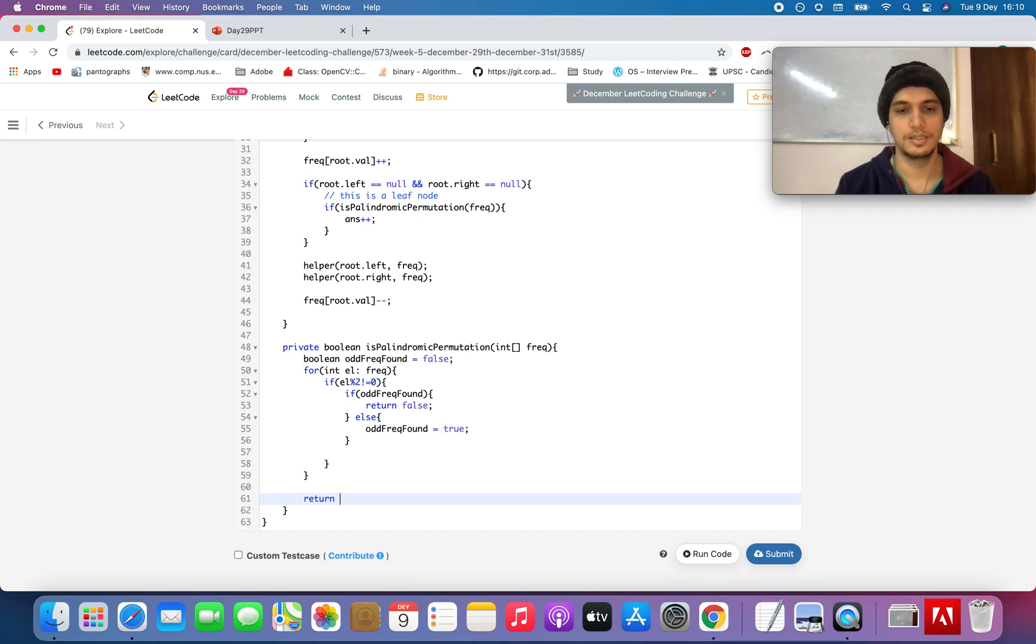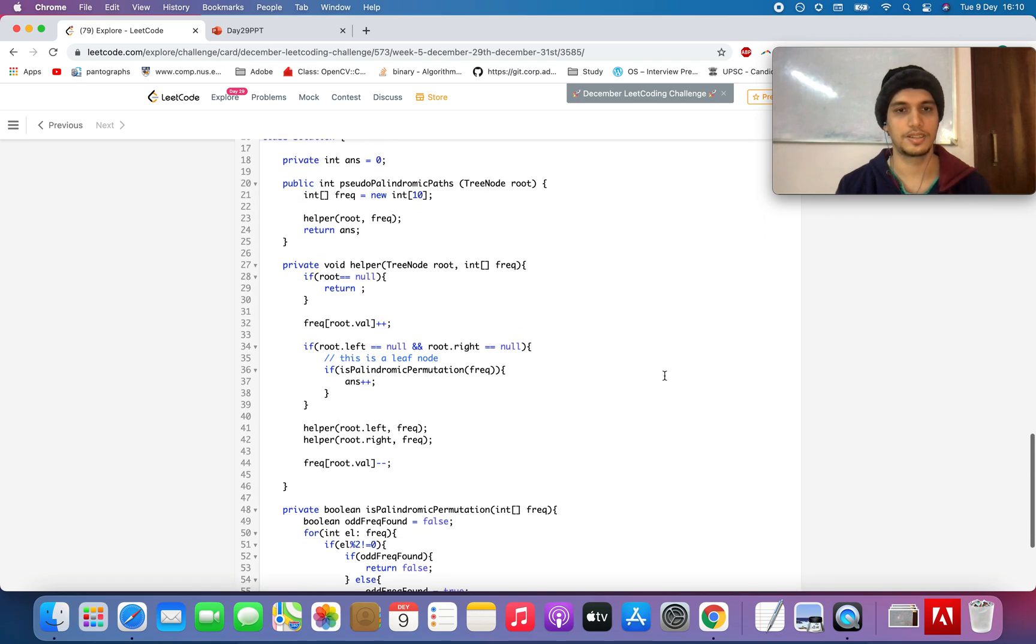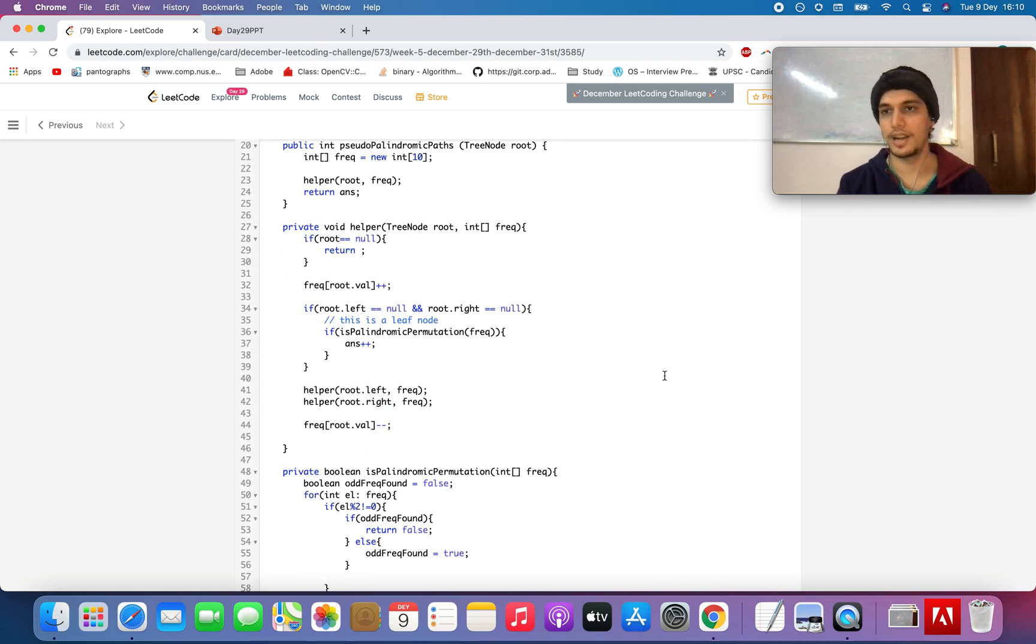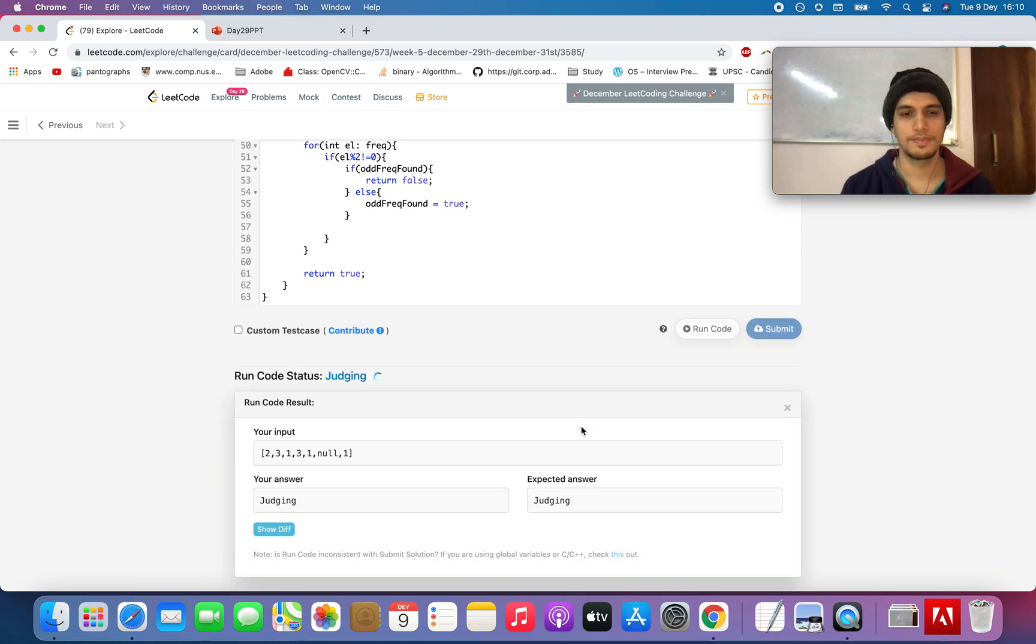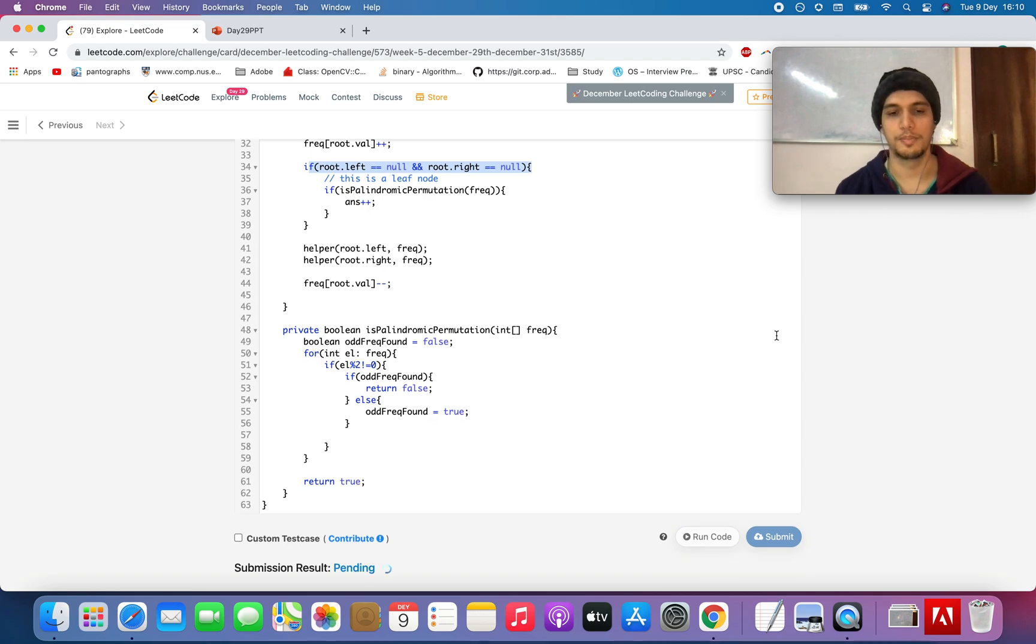Otherwise we will return true. So let's try and run this code - I have tried to make it as modular as possible. You can move this logic to a method as well. Let's run it. Expected answer is 2. Let's submit it - accepted.